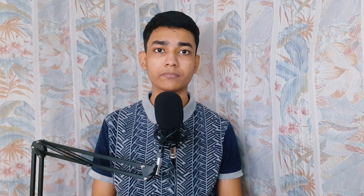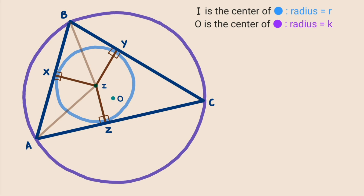Now let us see the proof of this theorem. First, we utilize the fact that the blue circle is the incircle, which means points X, Y, and Z are tangent points. When we draw radii to these three points, the angles formed there are 90 degrees. Now we draw two line segments: one joining points B and I, and the second joining points A and I. These two triangles are congruent by the right angle hypotenuse side criterion.